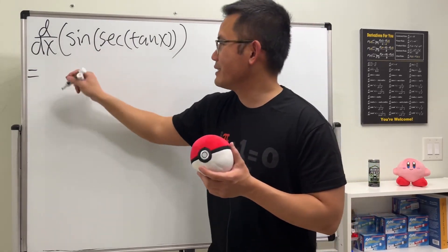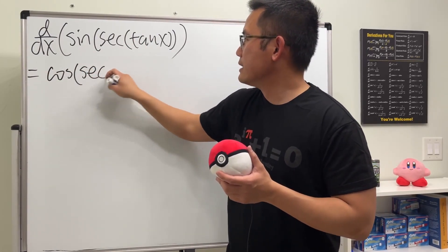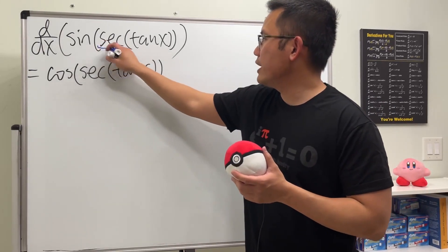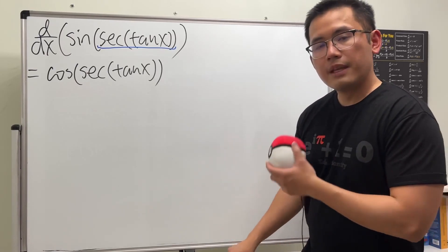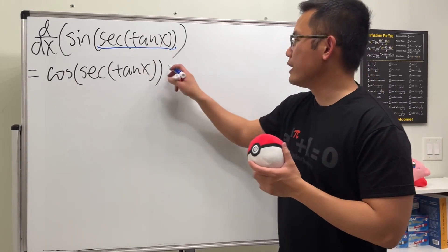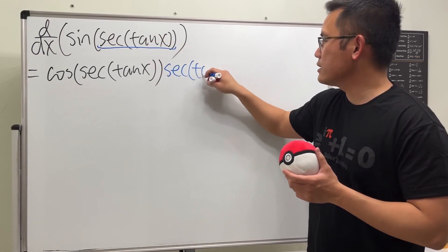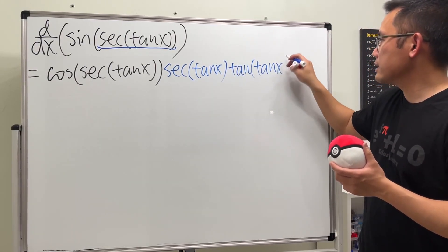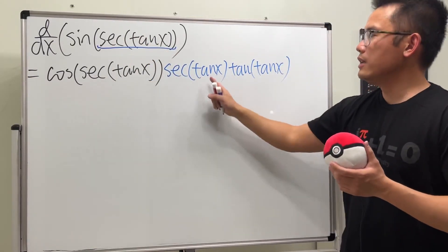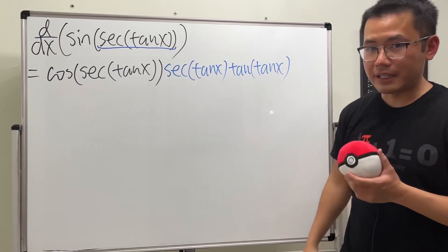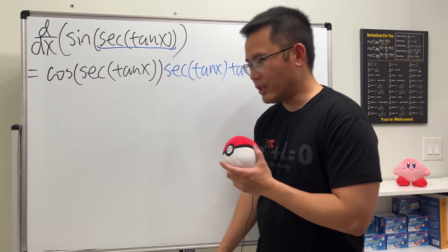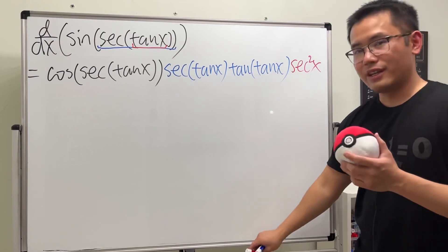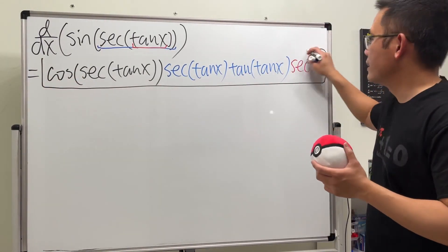Differentiating sine of whatever — you just make this cosine and keep the whatever, which is secant of tangent of x. Continuing, the derivative of secant is secant-whatever times tangent-whatever, so we get secant of tangent x, multiplied by tangent of tangent x. Lastly, we multiply by the derivative of tangent x, which is secant squared x, and we are done.